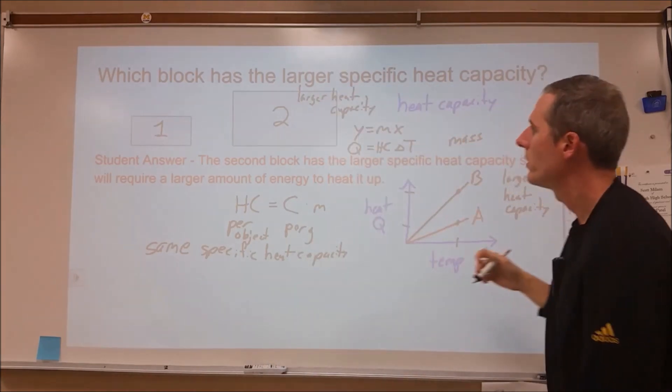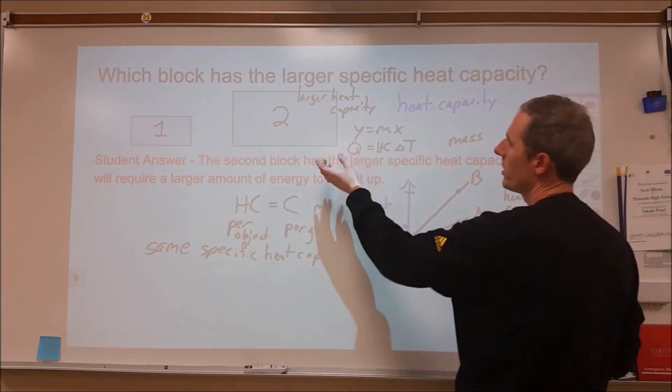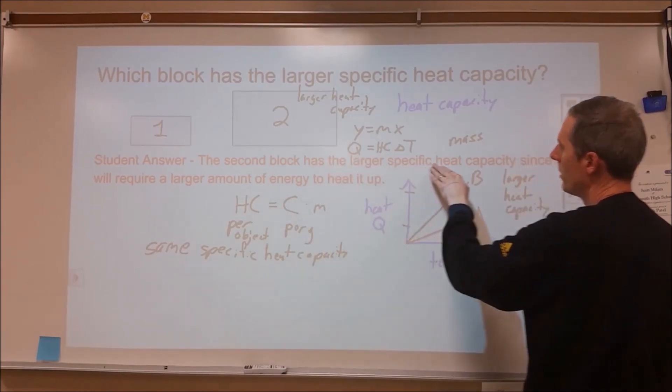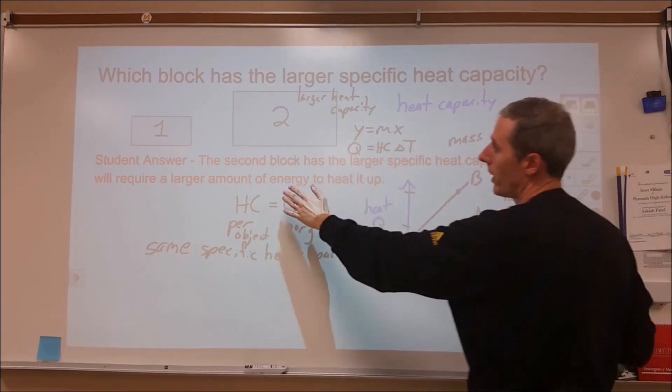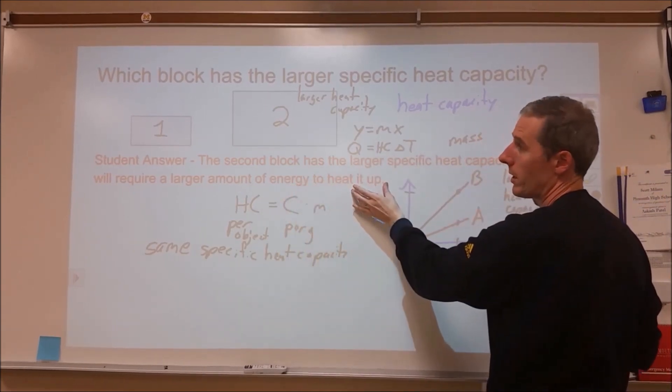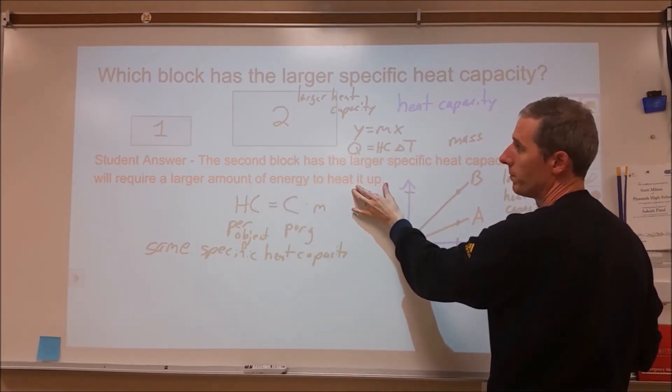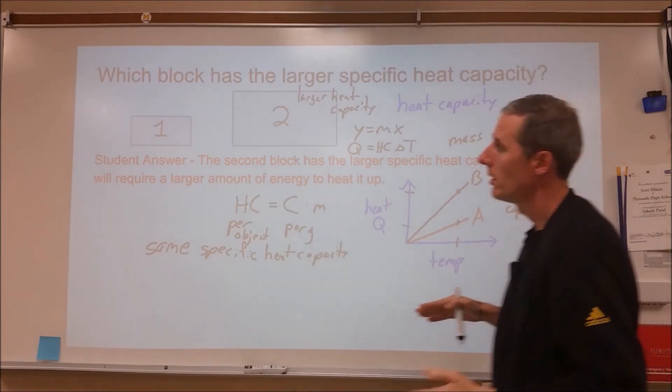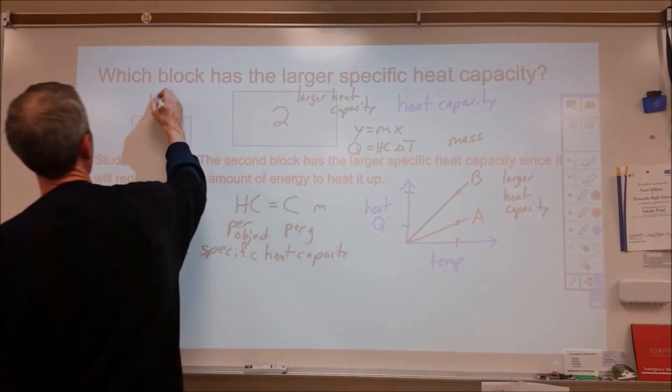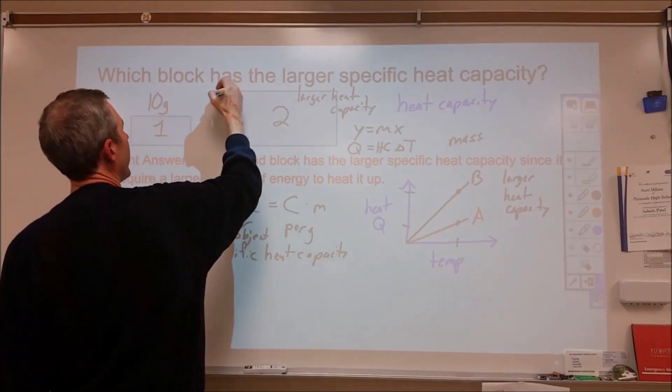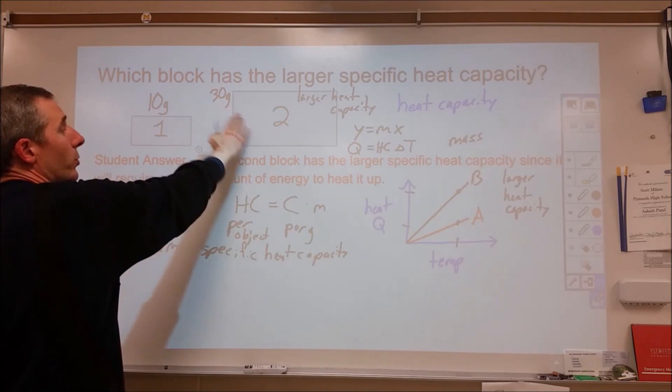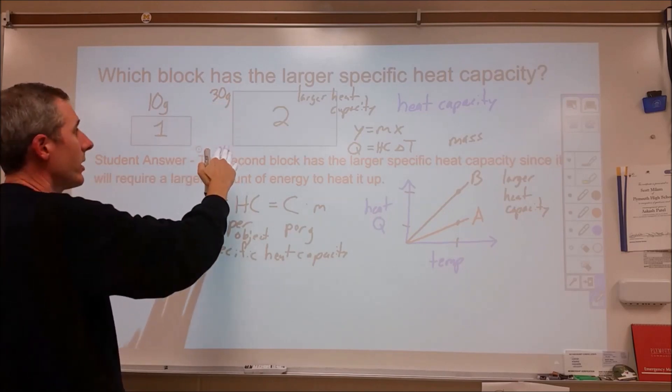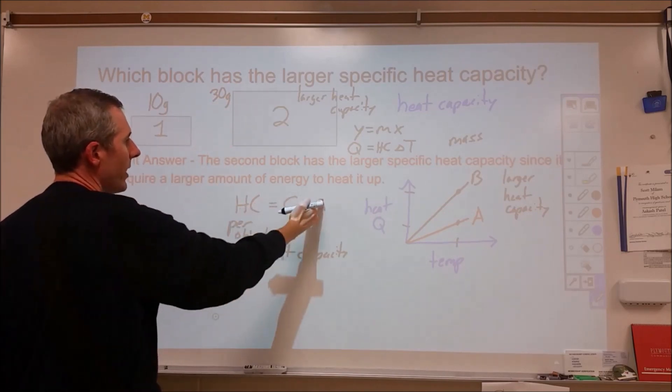Two has a larger heat capacity. The student here is explaining heat capacity when they're asked about specific heat capacity. The second block has the larger heat capacity since it requires a larger amount of energy to change its temperature by the same amount. They're talking about heat capacity, not specific heat capacity. We could have a 10 gram block here and a 30 gram block here. This one has three times the larger heat capacity, but when I divide that heat capacity by the masses, I'm going to end up with the same specific heat capacity.